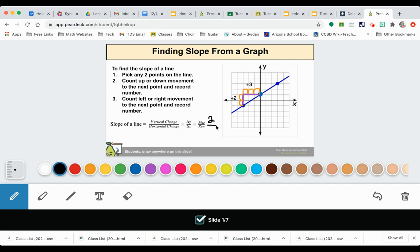and I'm putting that over my run, which is my horizontal movement, which was three. So my slope of this line is two-thirds.